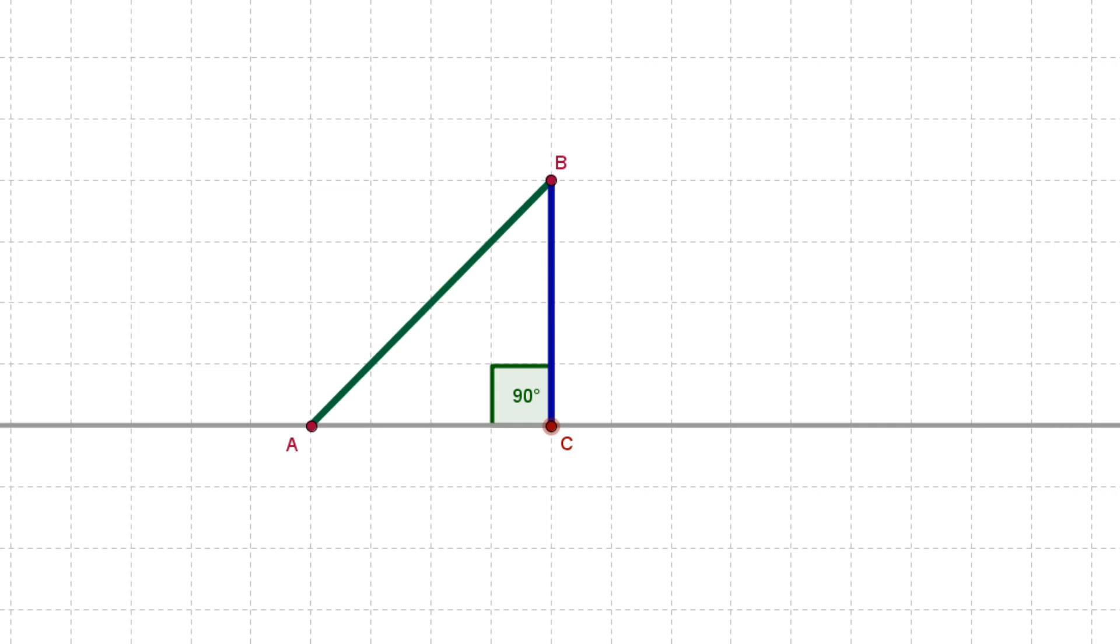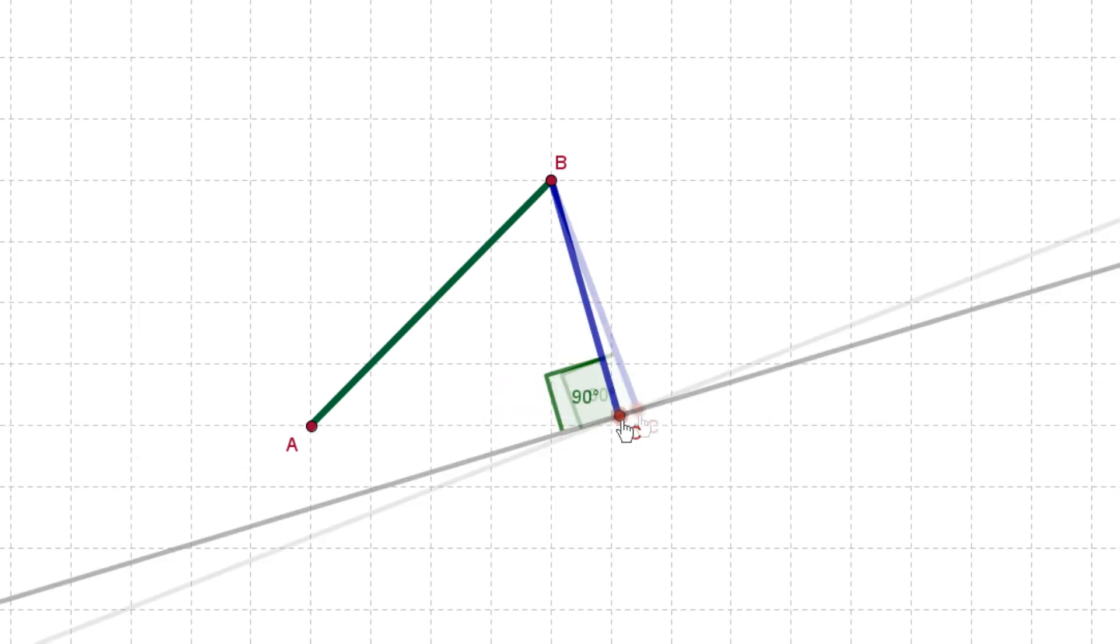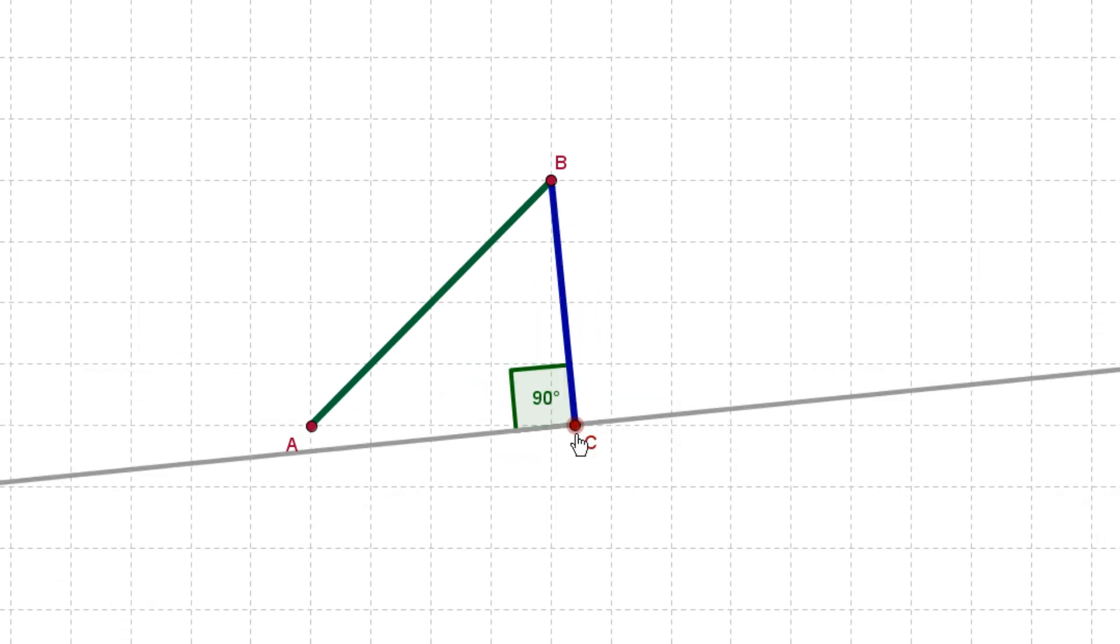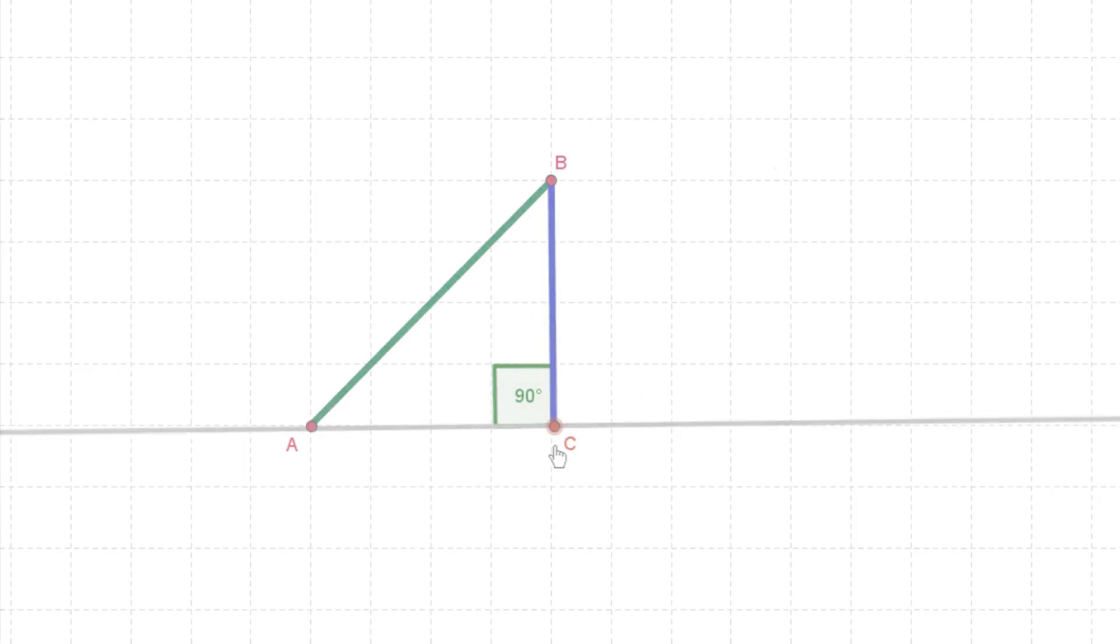So this is an okay method for congruency. But remember, the condition angle side side, ASS, only applies to right-angled triangles. Hope that helps. If you want to play with these ideas, both these GeoGebra constructions are free to download as GGB files from the website. And now for some problems.